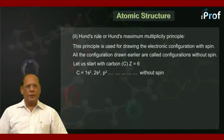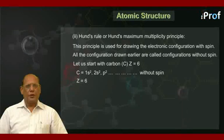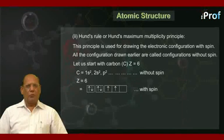But it can be written as shown here. One box for 1s orbital containing 2 electrons with anti-parallel spin. Similarly, a box for 2s orbital contains a pair of electrons with anti-parallel spin.